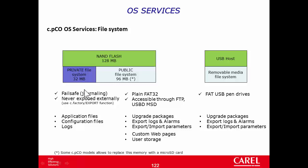In the first part, the system saves the application files — the result of the compilation of C-Strategy and C-Mask — and configuration files like chiller compressors and so on. There are also 4 MB of logs where the data logger saves values. An important feature of the private memory is that it is failsafe.